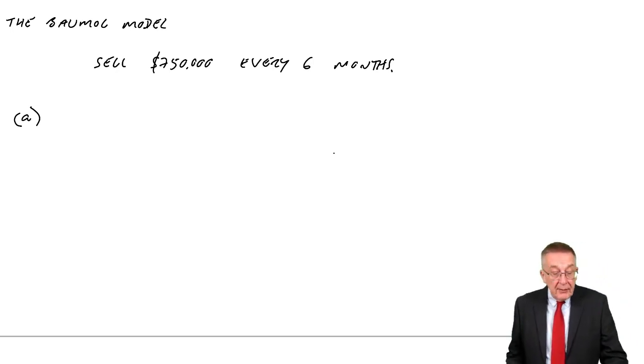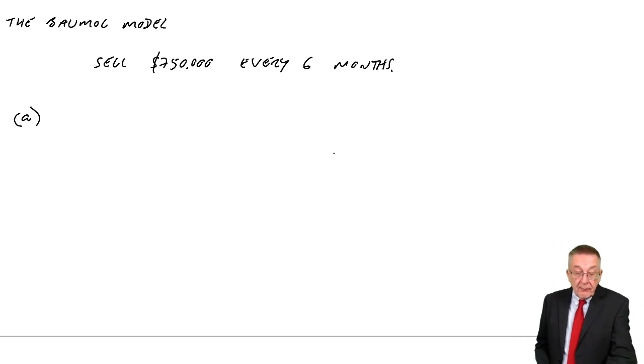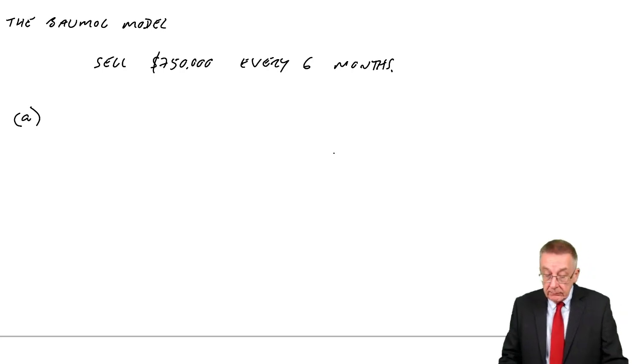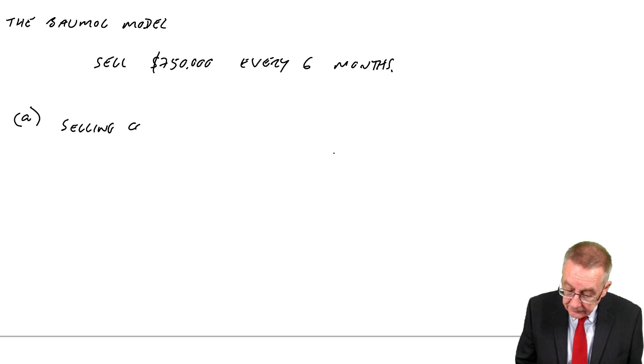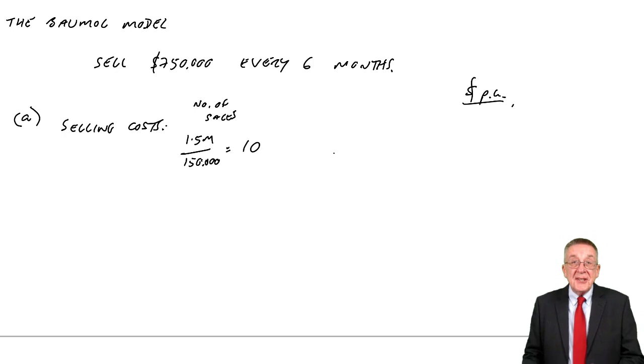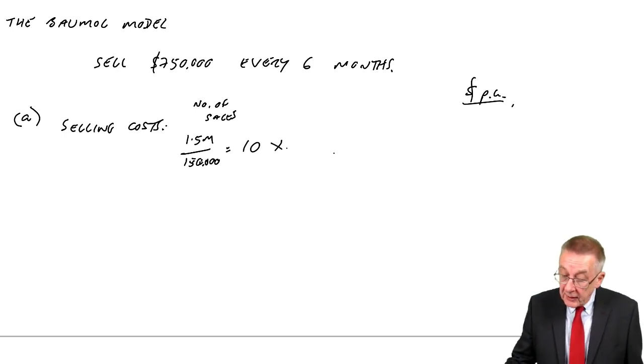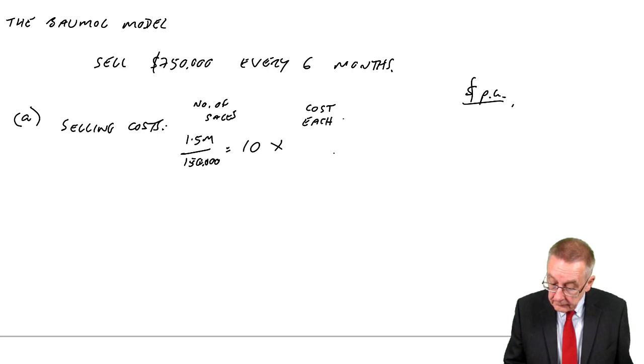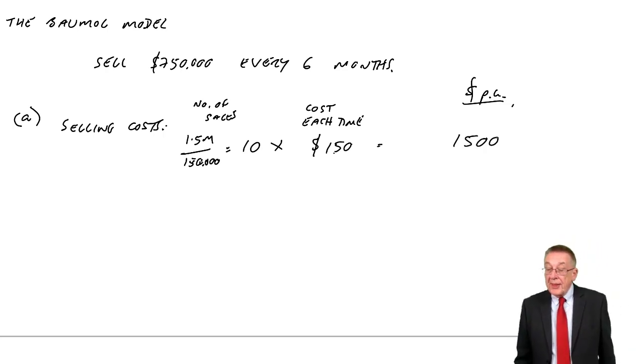Look at part A. Suppose we decide to sell $150,000 of investments each time. Calculate the total cost per year to the company. First of all, every time we make a sale, we've got the cost of selling. The selling costs over a year - we need 1.5 million in total. If we're selling 150,000 each time, we'll make 10 sales during the year times the cost each time, which is 150. So over a year, it'll cost us 1,500.